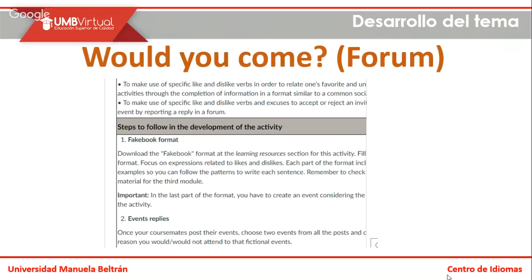The task 'I Like It' refers to making use of specific like and dislike verbs in order to relate one's preferences and activities through the completion of information in a format similar to a common social network. It also involves using like and dislike verbs and excuses to accept an invitation or report a reply in a form. Tenemos dos partes — vamos a ver el formato Facebook, aunque es similar, no es Facebook. Ustedes van a encontrar el formato en Word.